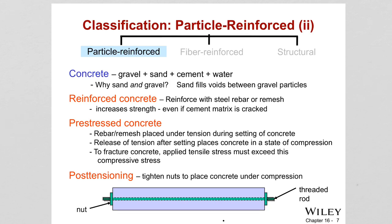Another reinforcement technique for strengthening concrete involves introducing residual compressive stresses into the structural member — this is called prestressed concrete. Ceramic materials are not good in tension. If you prestress the concrete by applying compressive stresses initially, it will counteract tension, increasing the tensile strength. This method is used for brittle ceramics, which are stronger in compression than in tension. For fracture to occur in a prestressed concrete member, the magnitude of the pre-compressive stress must be exceeded by an applied tensile stress.